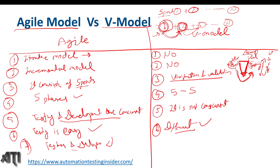The seventh difference: in agile, testers and developers are dependent on each other, whereas in V model they are independent, because both the phases — verification and validation — are separate. So these are the differences between agile model and V model. Hope you liked it, please share this video, thank you for watching, have a nice day, bye bye.